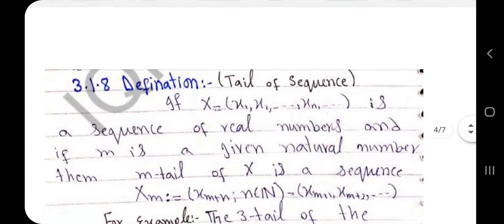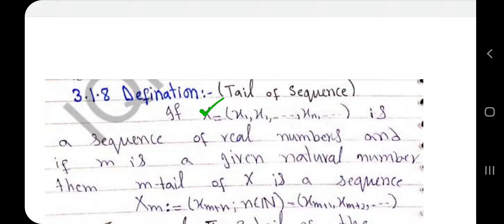Consider a sequence x with terms x1, x2, ..., x_n going to infinity. Given any natural number m, the m-tail of the sequence is formed by skipping the first m terms. So the first term of the m-tail is x_{m+1}, the second term is x_{m+2}, and in general the terms are of the form x_{m+n}, where n belongs to the natural numbers. For example, if we skip 2 terms, we get the 2-tail; if we skip m terms, we get the m-tail, with terms x_{m+1}, x_{m+2}, and so on.